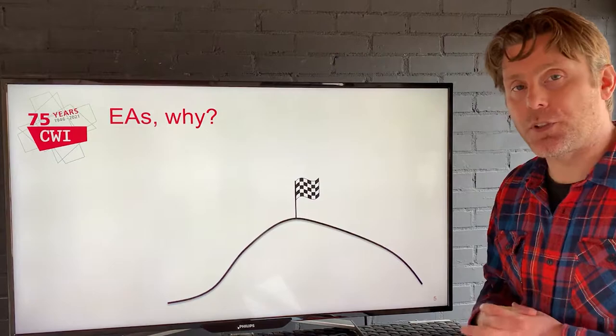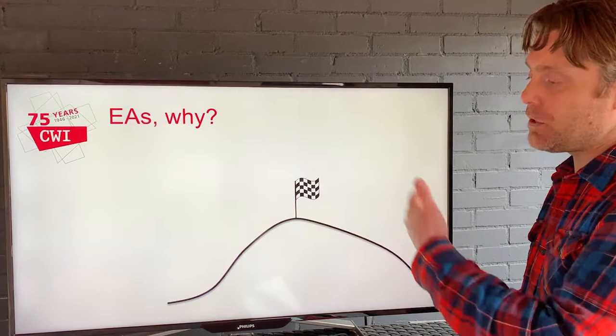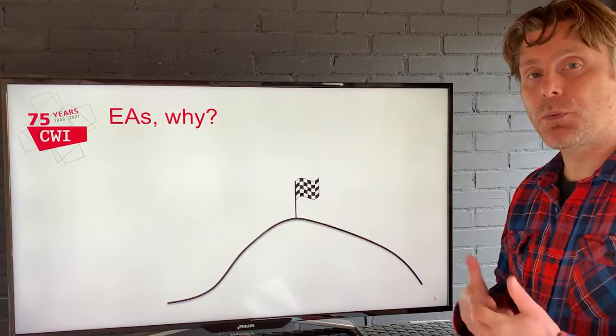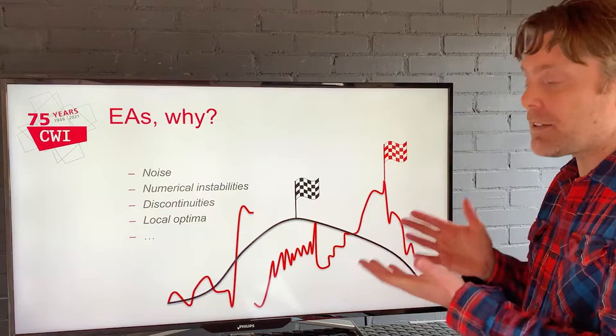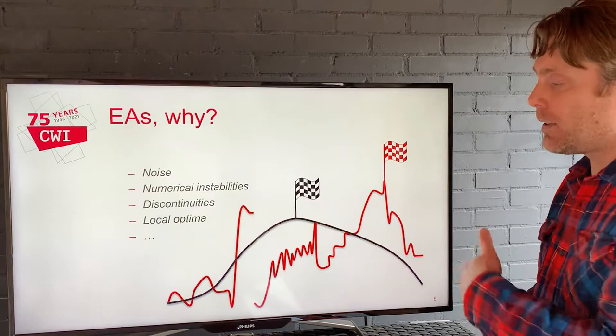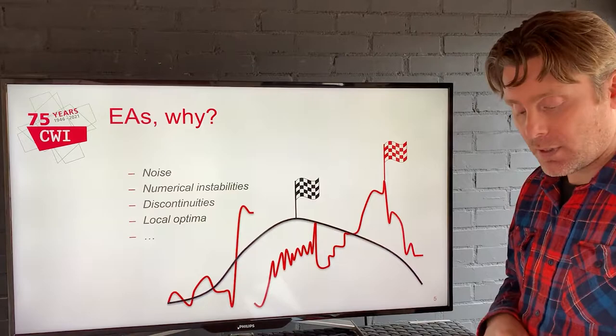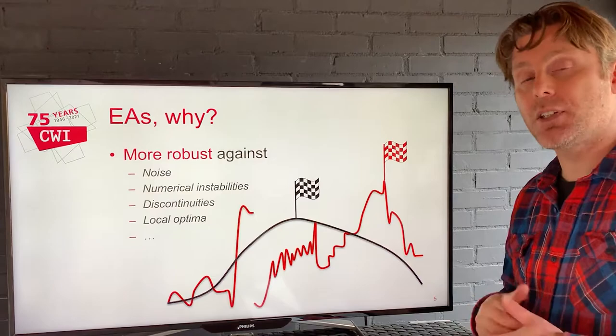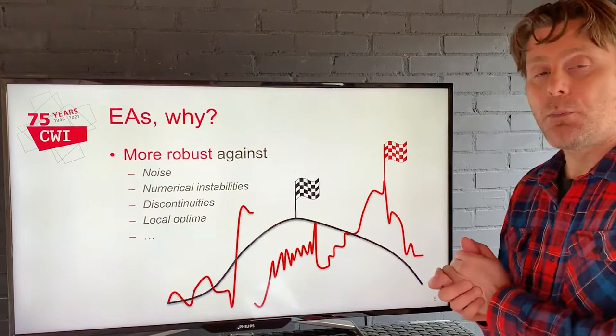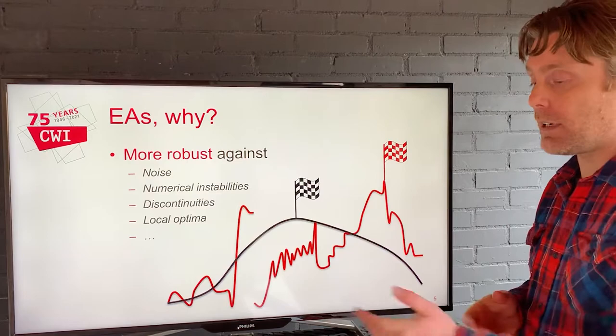Why would we want to study evolutionary algorithms? If you talk about optimization, you are quick to draw something like a simple hill — we want to get to the top. But real-world problems typically don't look like this. They are much more nasty: they have noise, numerical instabilities, discontinuities, and local optima — they look much more like the red line. To find the optimum in this search space is much more difficult, which is why I like evolutionary algorithms so much — by virtue of that population and mechanisms that cope with all of this, you can solve problems like this much more reliably and still find high-quality solutions.